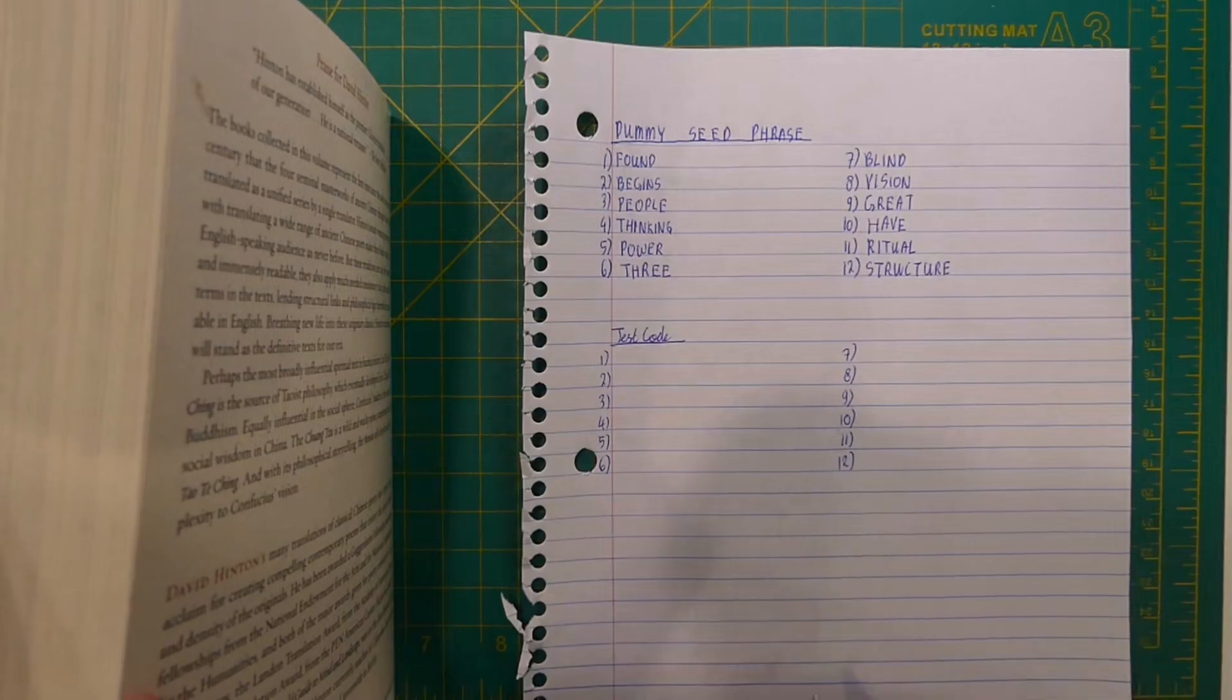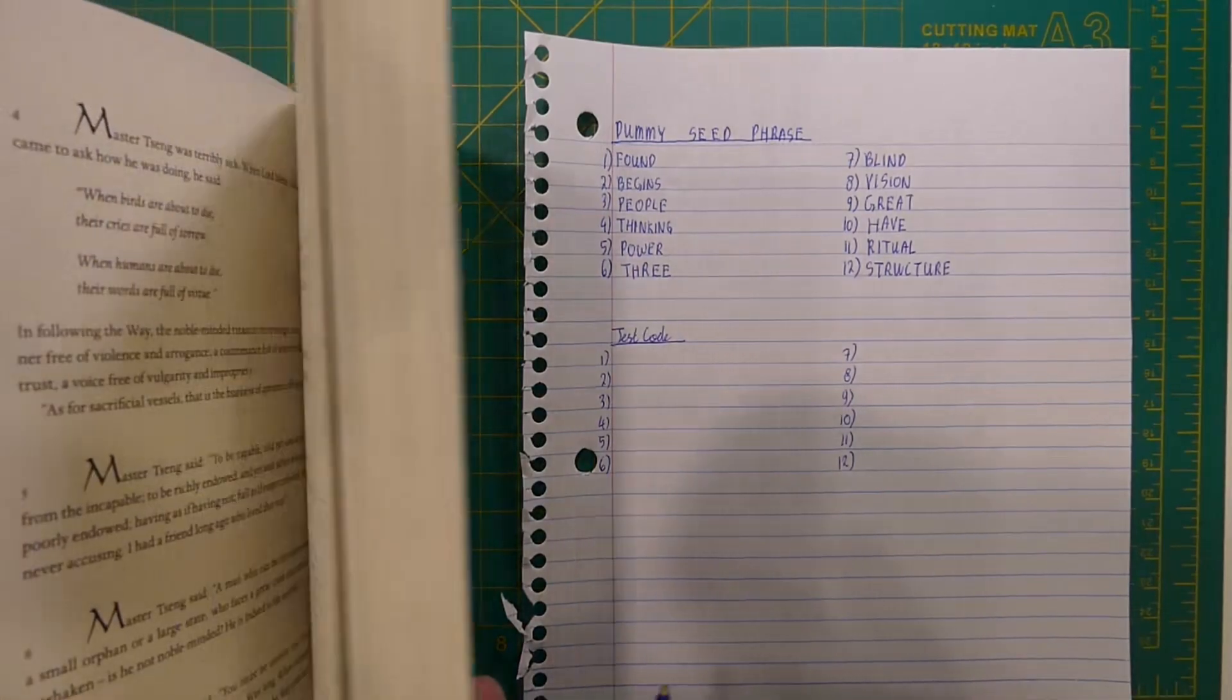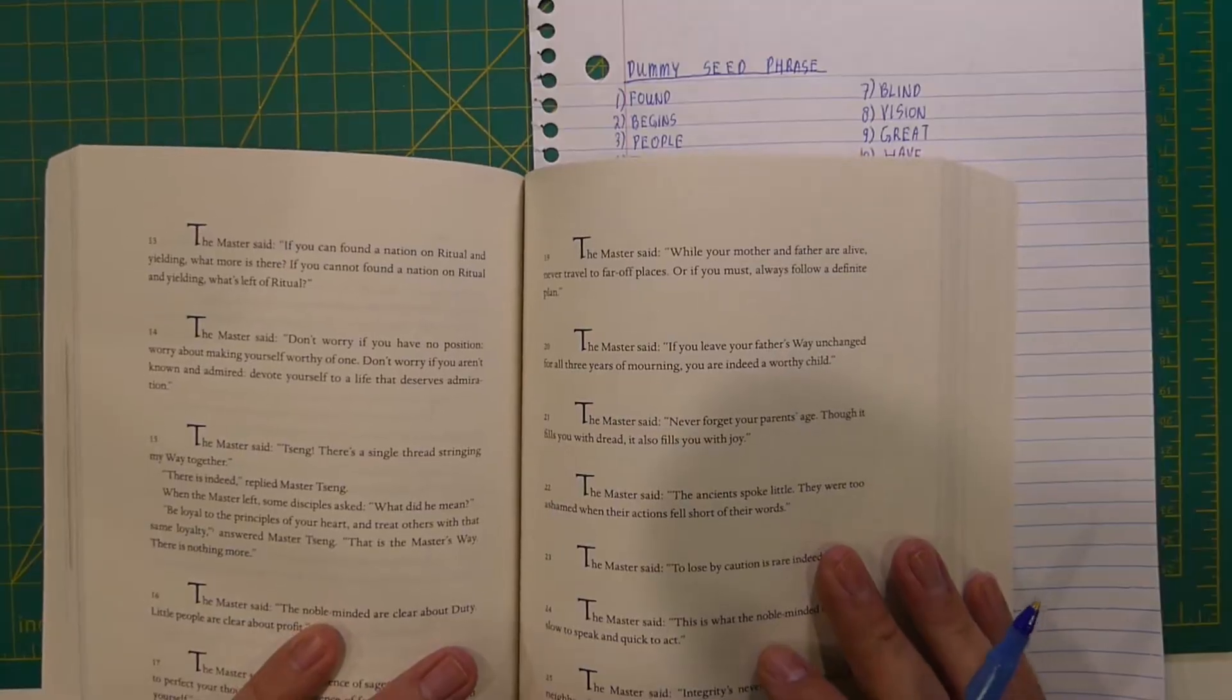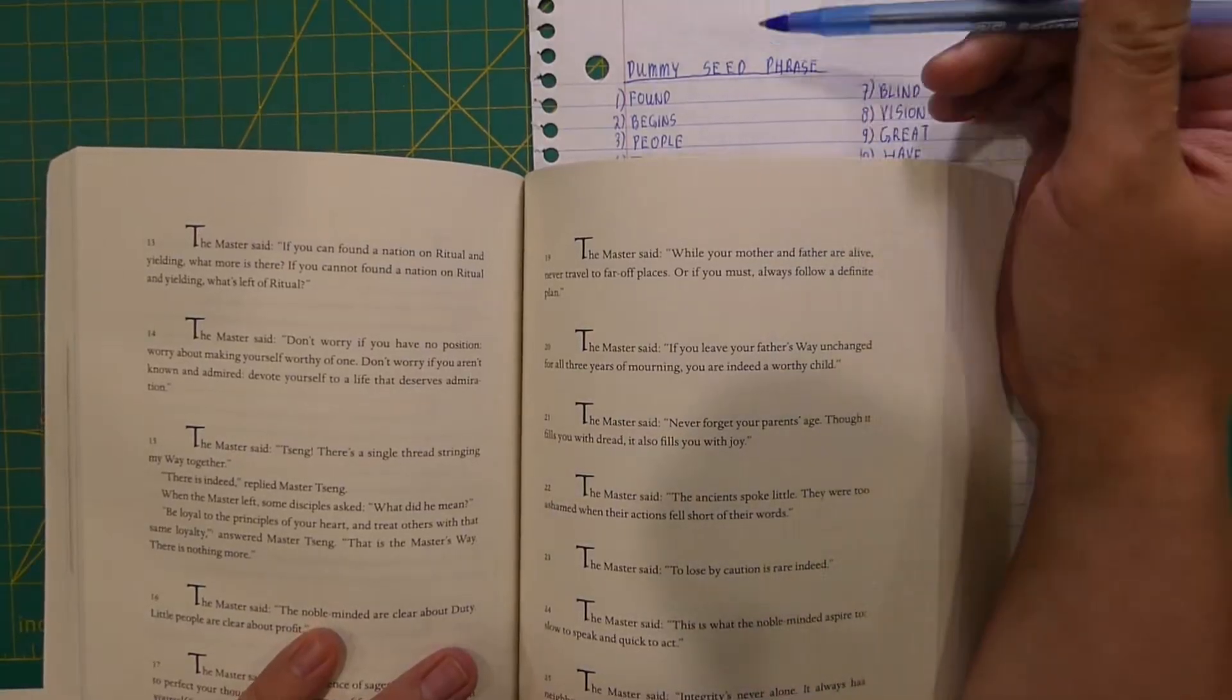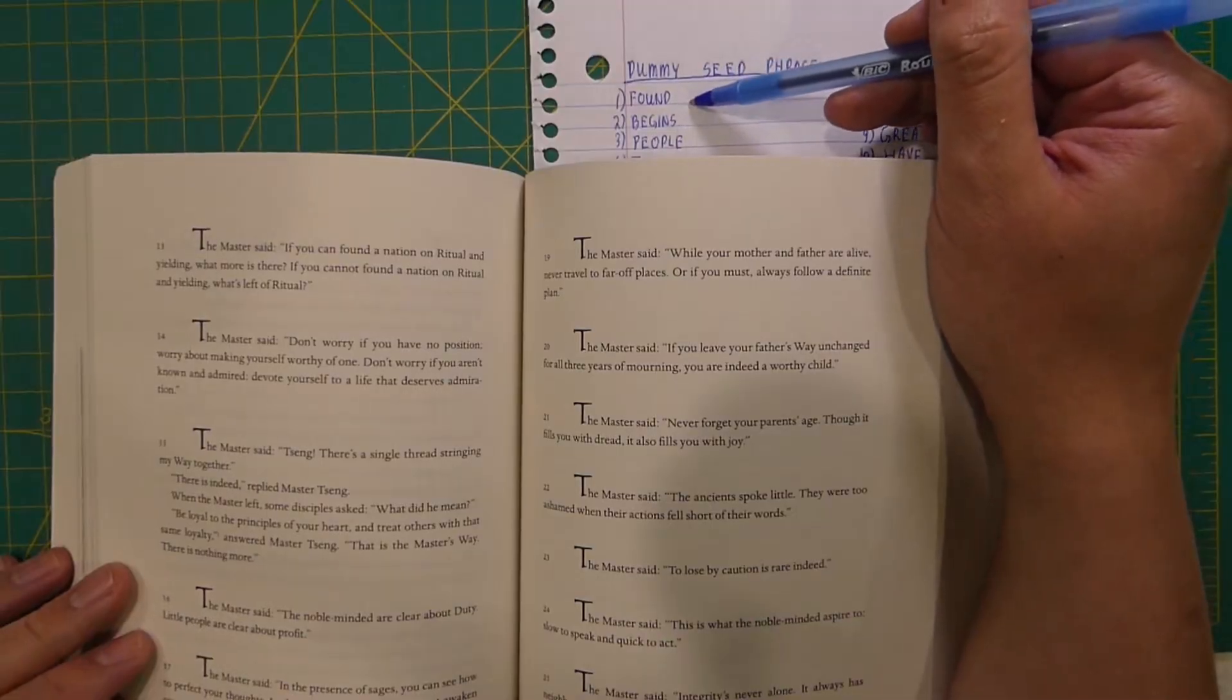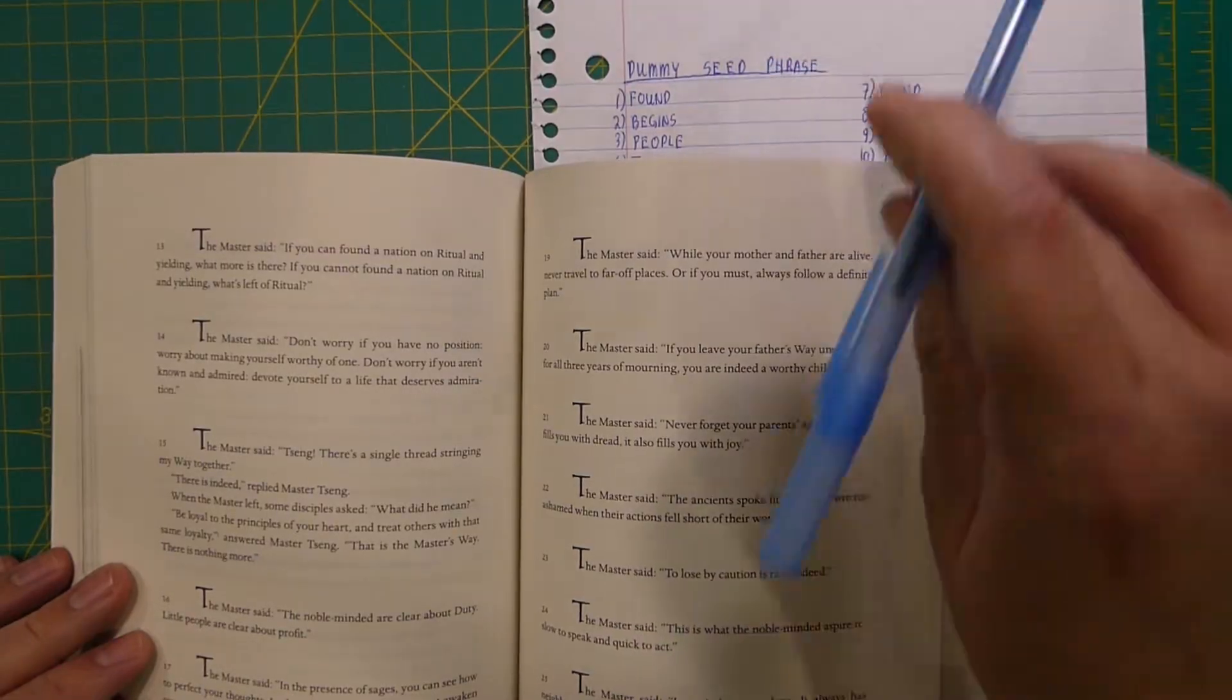And then my next step is to randomly flip. Once I reach a random page, I look up my seed phrase word in those pages. For example, the first word is 'found'.